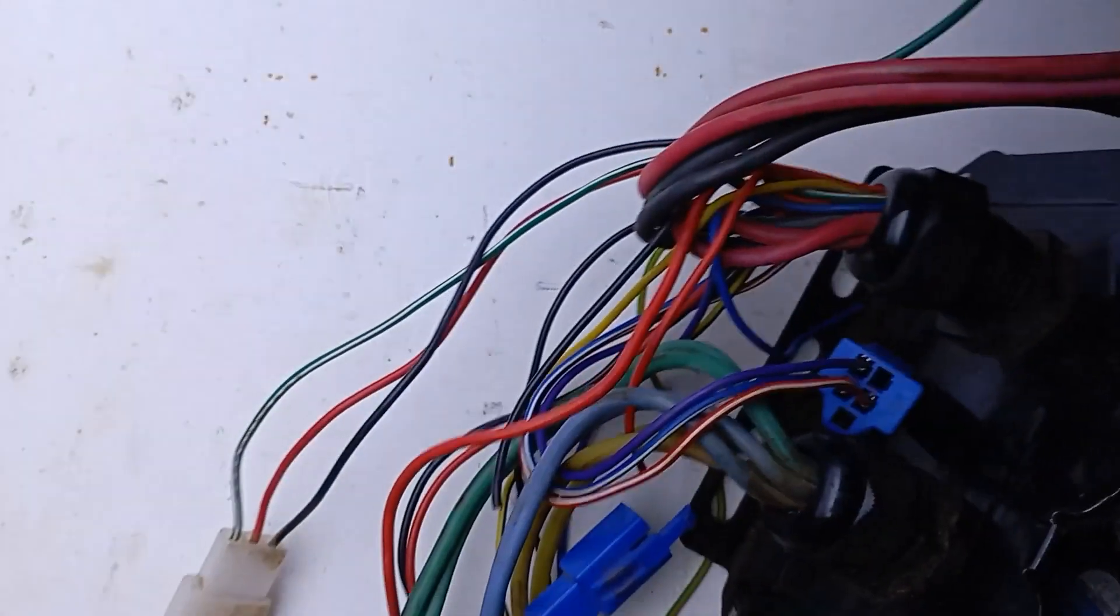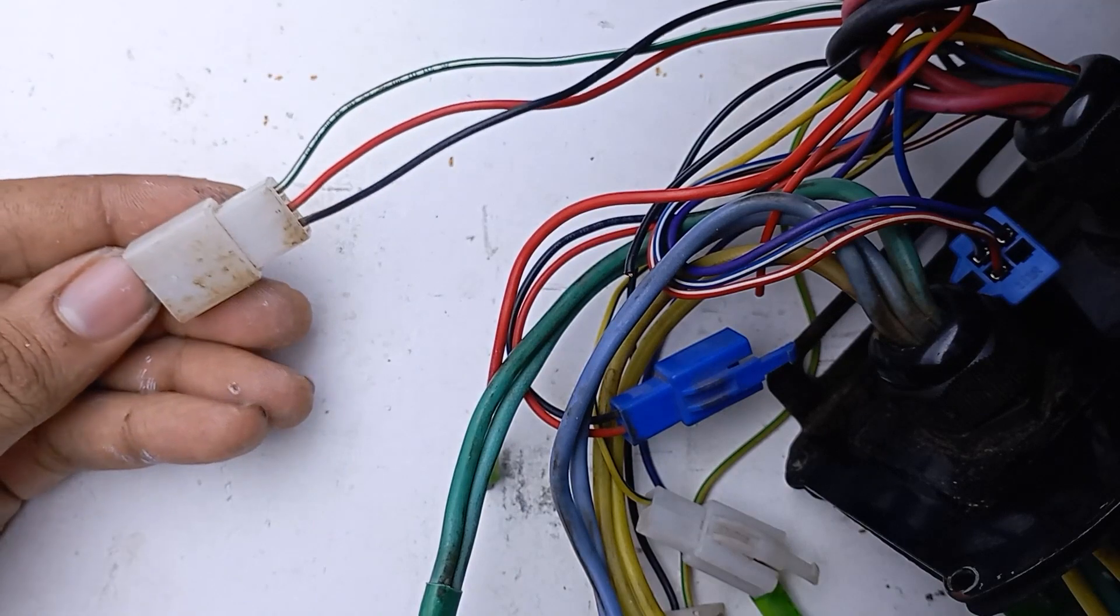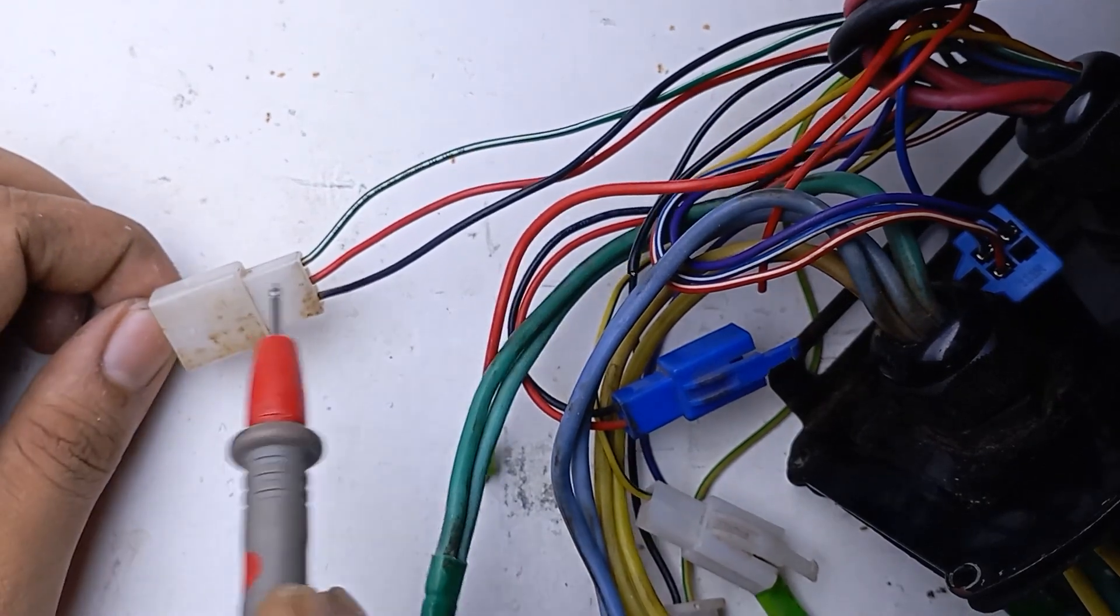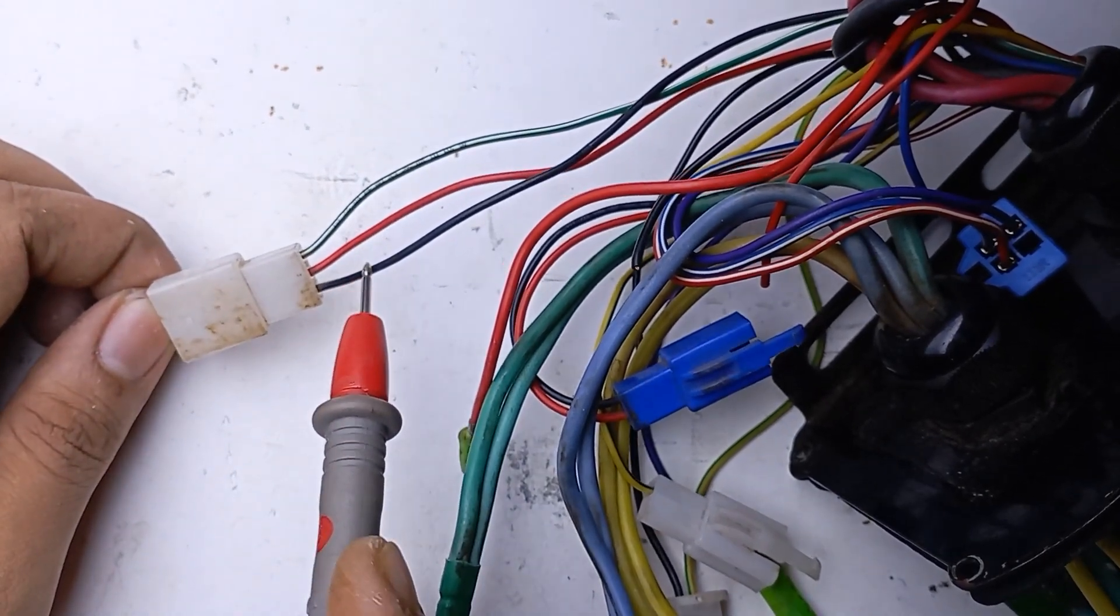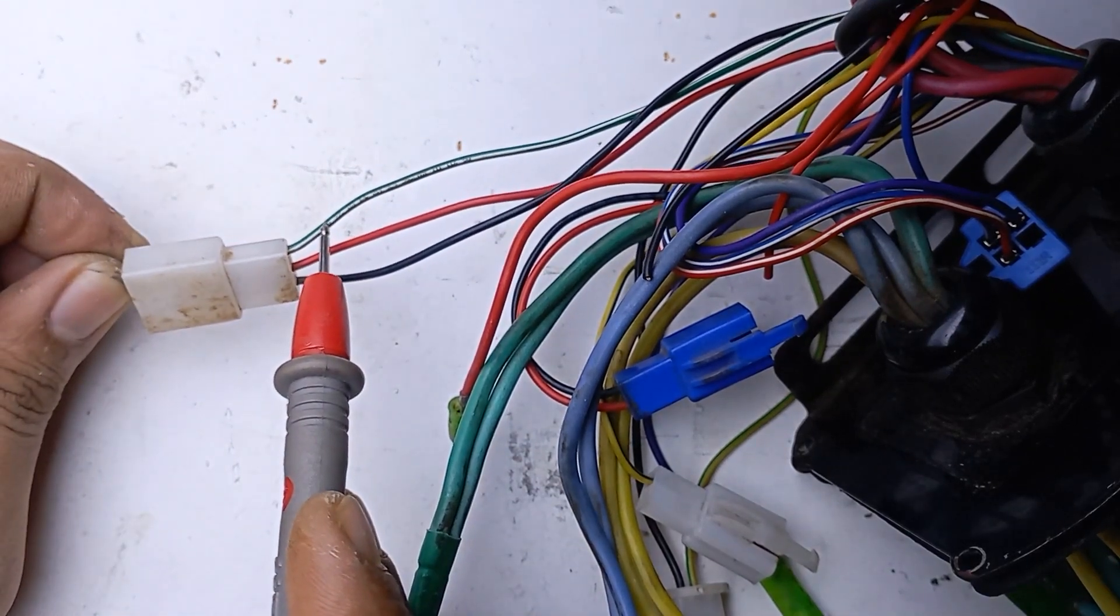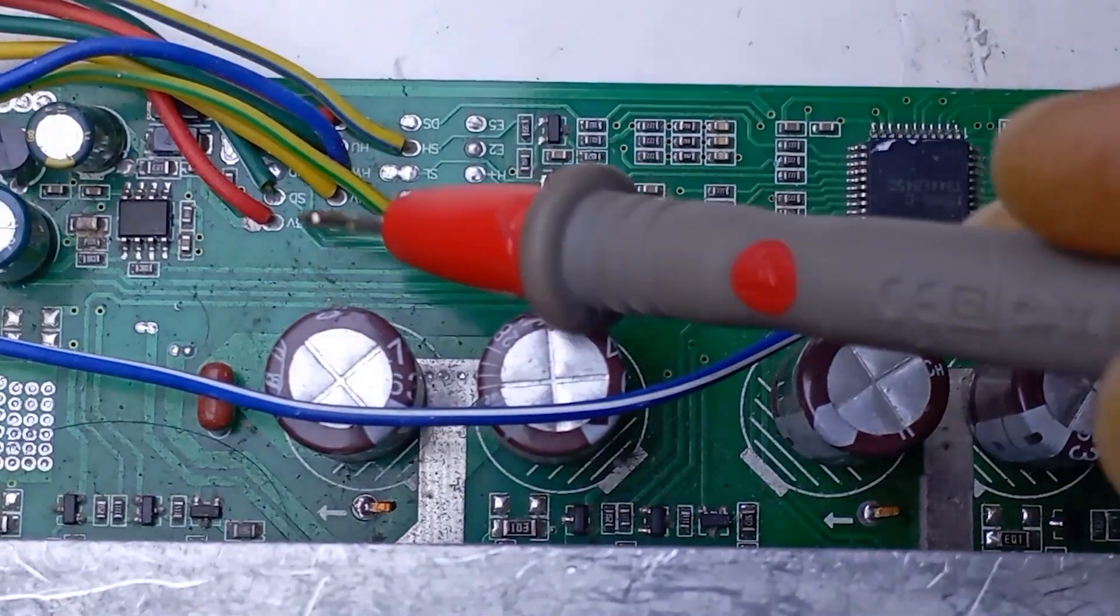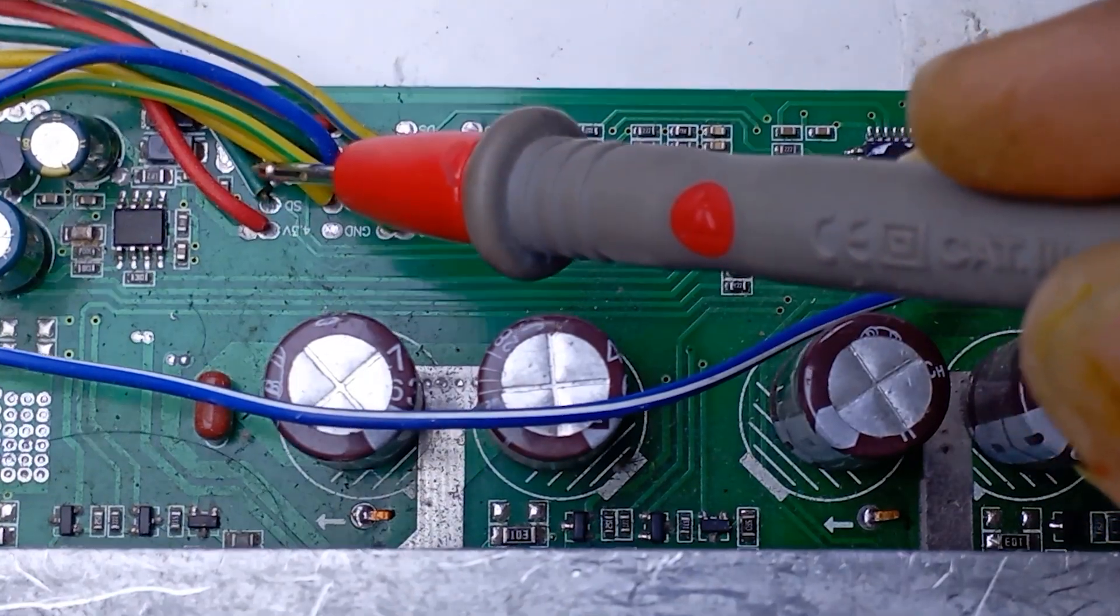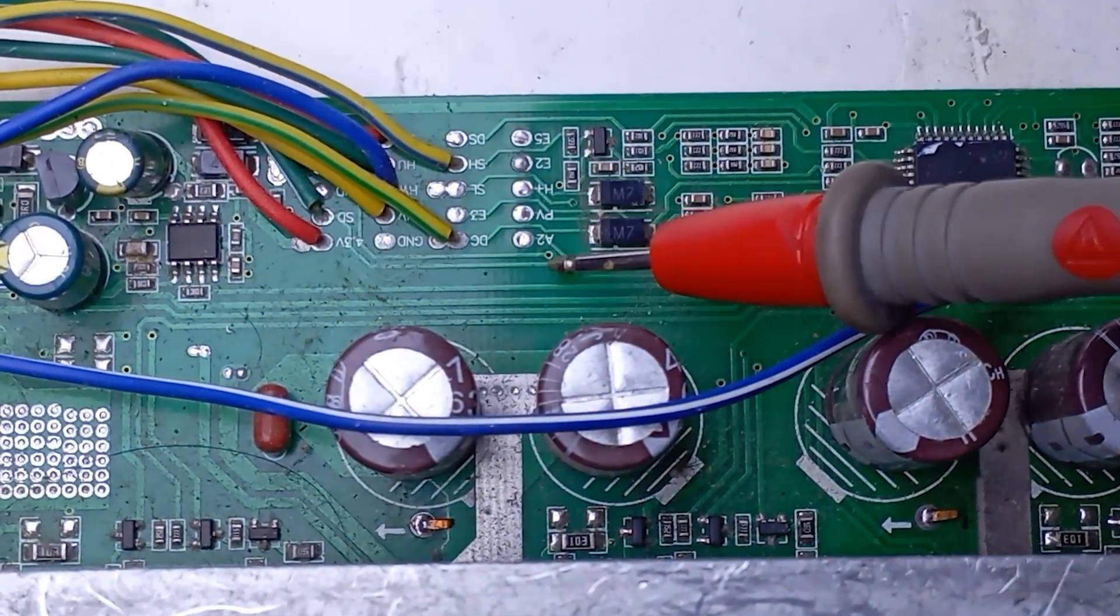Here we have the throttle connector: a positive 5 volts, the ground, and this green wire is the Hall sensor's output. We have to follow this green wire. Here we have the green wire inside the controller. Let's follow the trace.